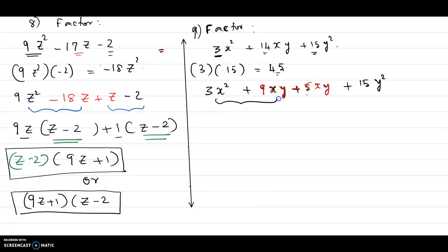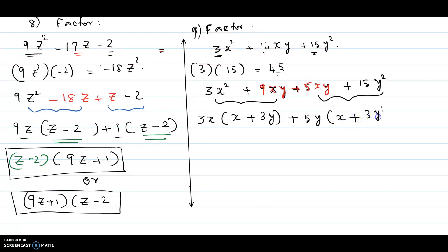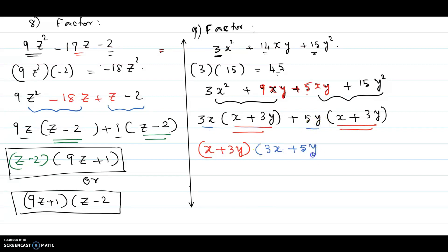Now group the terms as in the previous problem: first two together and the last two together. In the first two terms, 3x is a common factor; pull that out and you are left with x plus 3y. In the second two terms, 5y is a common factor, and you are left with x plus 3y. Now x plus 3y is a common factor for both terms; pull it out, and inside you write 3x from the first plus 5y from the second.